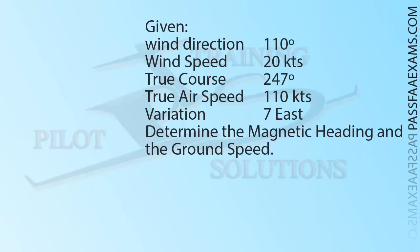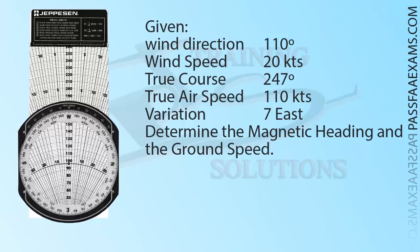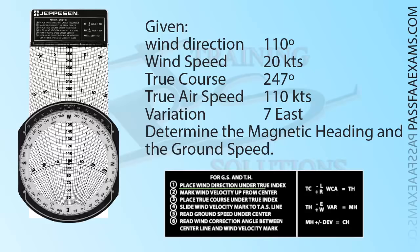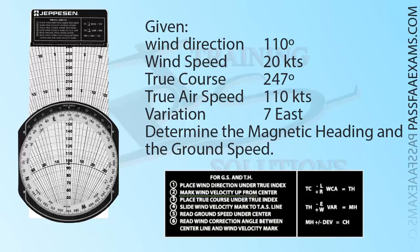All the information required to solve the calculations is on the various legends found directly on the E6B itself. Before we even start, the first thing I like to do is set the center of the plotter on the 100 line. This is not necessary, but it does make it easier for the calculations we are about to undertake. Following the instructions on the legend, step 1: place the wind direction of 110 under the true index. Next we mark the wind velocity of 20 knots up from the center. This is the main reason for placing the center of the plotter on 100, as now all we need to do is place the mark on 120.